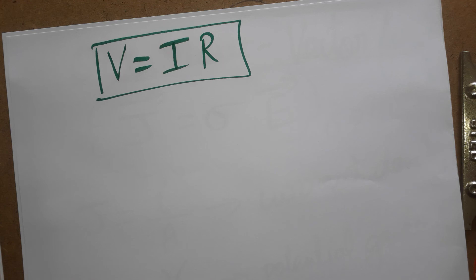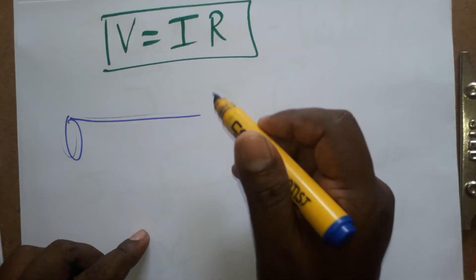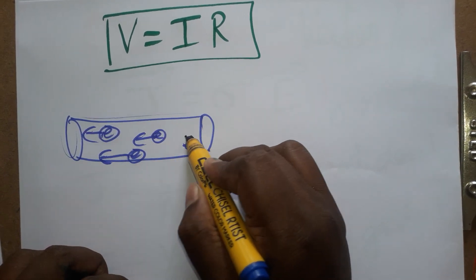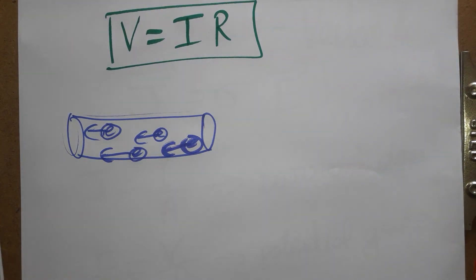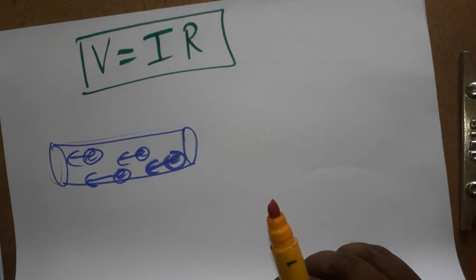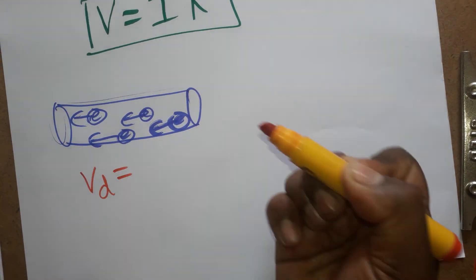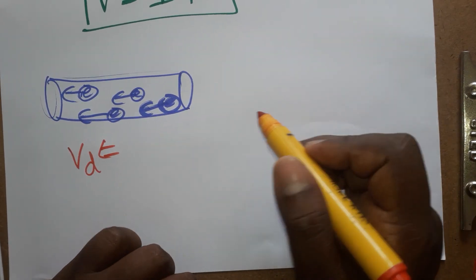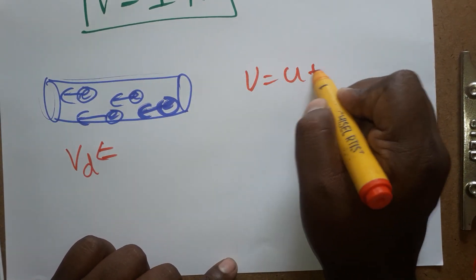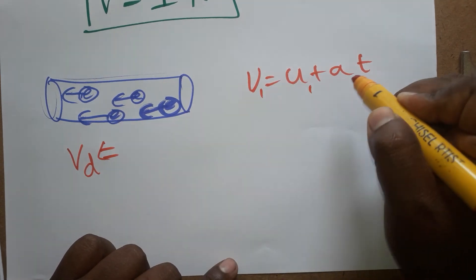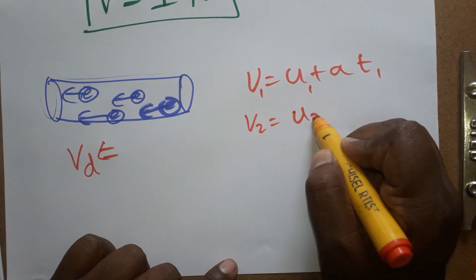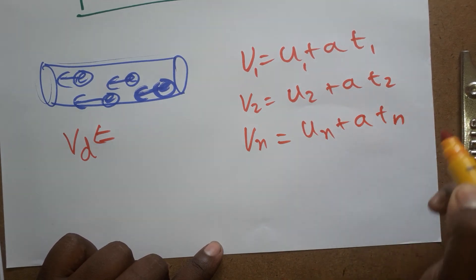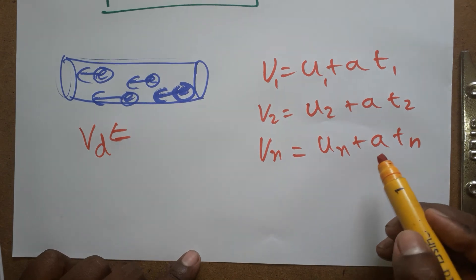We start from current. In a conductor with N electrons moving from one place to another, the electron will get a drift velocity vd. Using v = u + at for each particle: v1 = u1 + at1, v2 = u2 + at2, up to vn = un + atn for the nth particle.